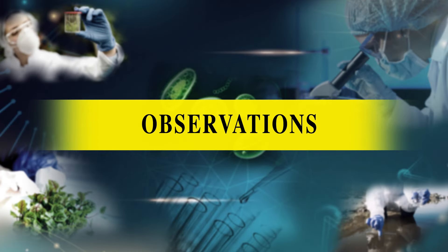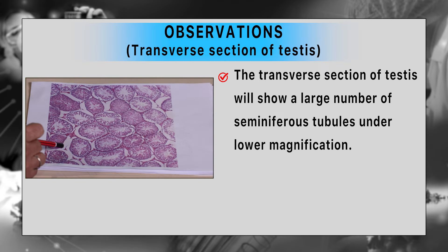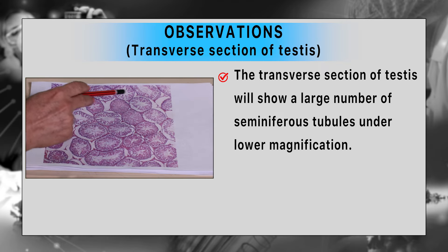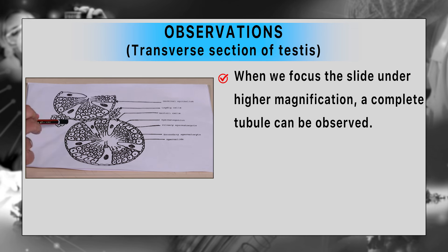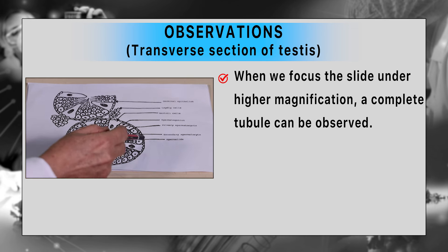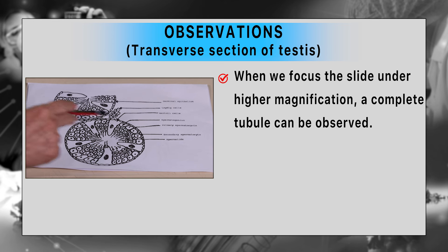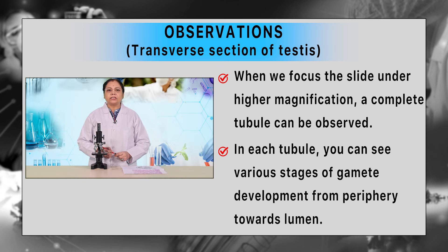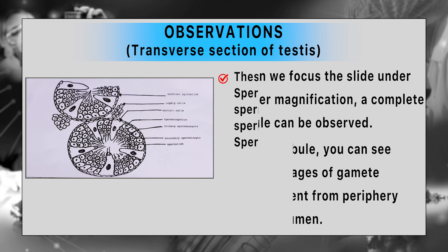After recording the features of both slides, let us observe the TS of testes first. The transverse section of testes will show a large number of seminiferous tubules under low magnification. When we focus the slide under high magnification, a complete tubule can be observed. In each tubule, we can see various stages of gamete development from periphery towards the lumen: germinal epithelium, spermatogonial cells, primary spermatocytes, secondary spermatocytes, spermatids, and spermatozoa.